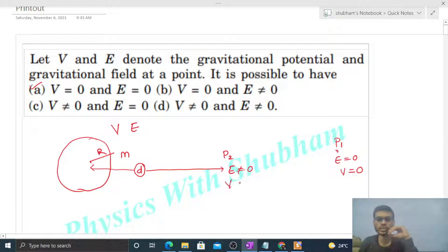Similarly, the potential is also not equal to zero. So option (d) is also correct. Let's say point P3 is inside this shell, then the field there will be zero, but potential is not equal to zero inside this shell.